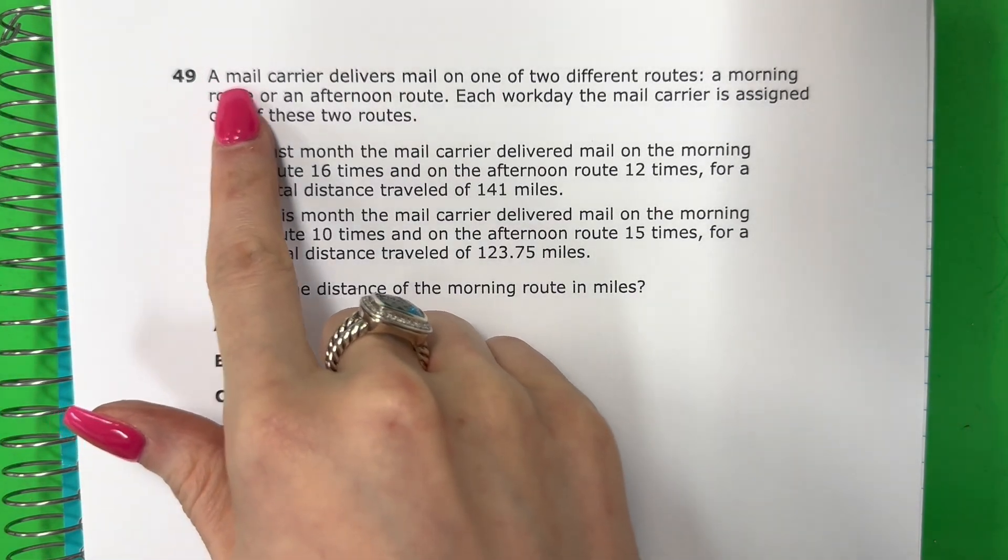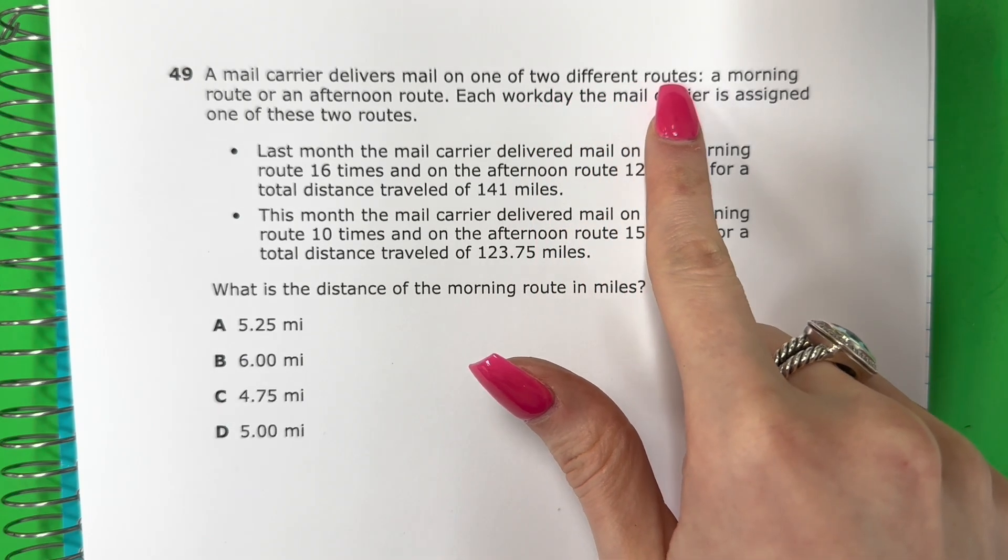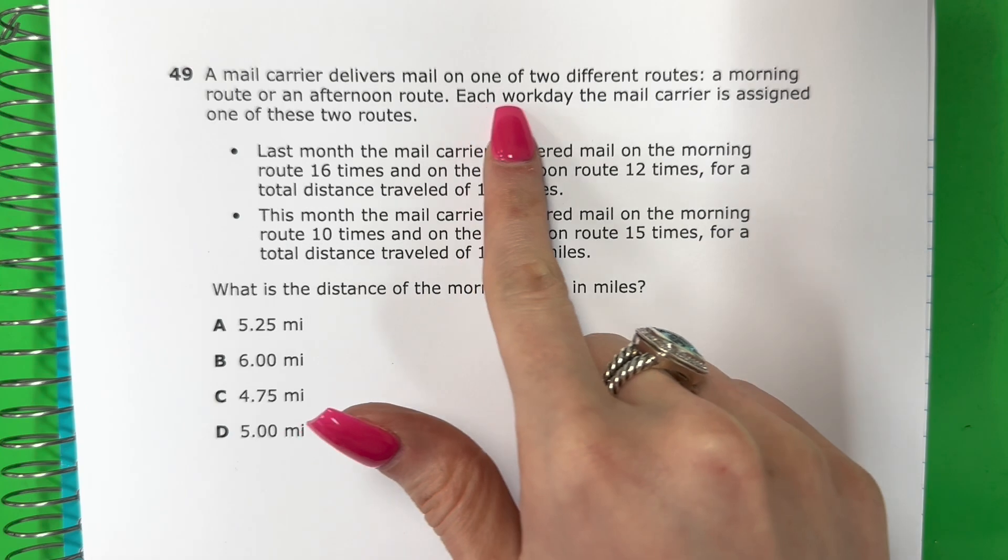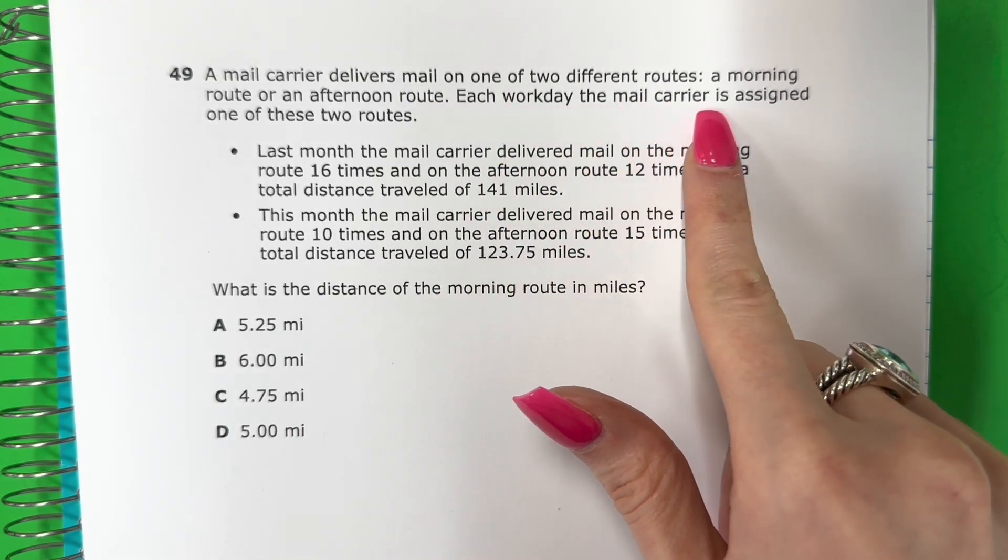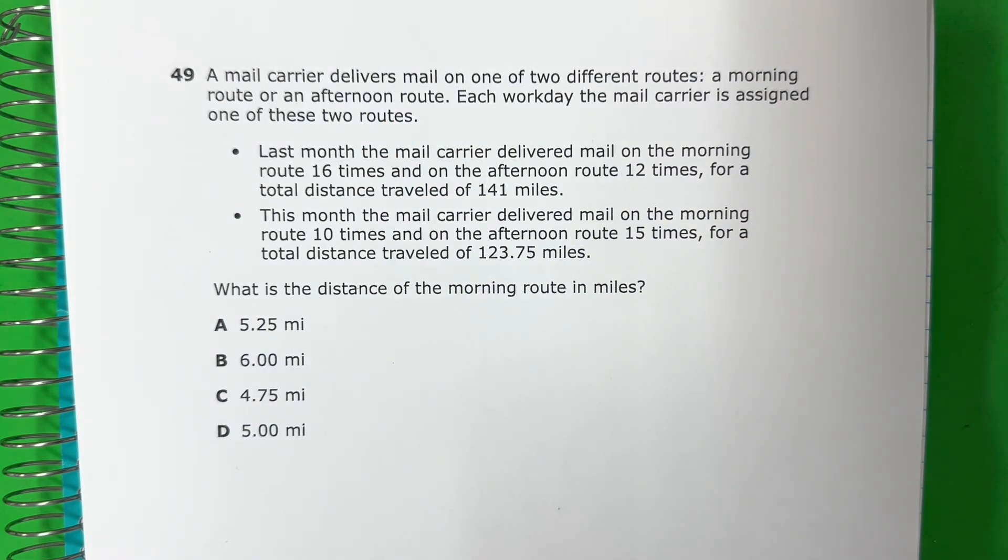Question 49. A mail carrier delivers mail on one of two different routes, a morning route or an afternoon route. Each workday, the mail carrier is assigned one of these two routes. Un cartero entrega el correo en una de dos rutas diferentes, una ruta de mañana o una ruta de tarde. Cada día laborable se le asigna al cartero una de estas dos rutas.